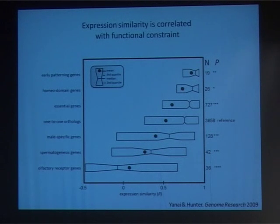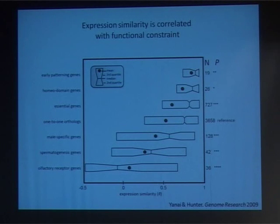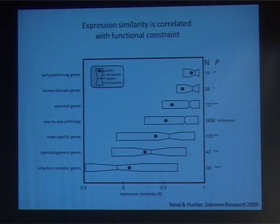Principle number two: when we look at which genes accumulate the changes, it's not random and not evenly distributed. Some groups of genes accumulate more changes than others. In particular, it's those genes we shouldn't really expect to be expressed at all — like olfactory receptors that should be expressed in the adult olfactory epithelium, not in the embryo. If you take a random C. elegans olfactory receptor, most likely in briggsae it will have a different expression profile. However, genes known to be important for development tend to be very well conserved — showing a correlation between conservation and functional relevance.